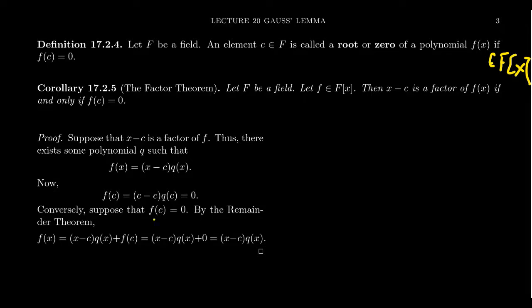Conversely, suppose we have a root. In this setting, we are going to use the Remainder Theorem. The Remainder Theorem told us that if you divide a polynomial by the divisor x minus c, then the remainder in that division will be the evaluation of the polynomial. Therefore, f(x) equals (x-c) times q(x) plus f(c). But since we're assuming that c is a root, the remainder will be zero, and therefore we have a factorization.